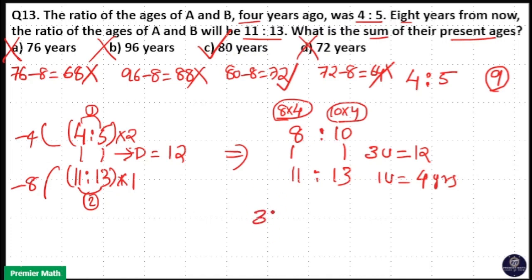Now after 4 years, that will be 36 and 44. The sum will be 80. So your answer is option C.